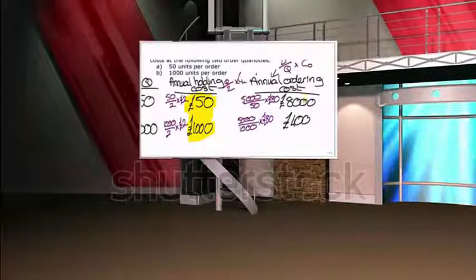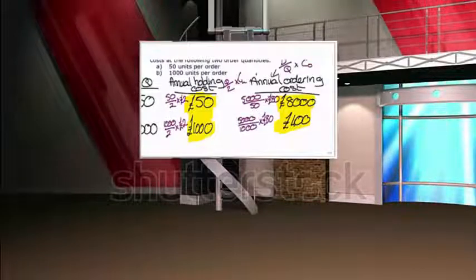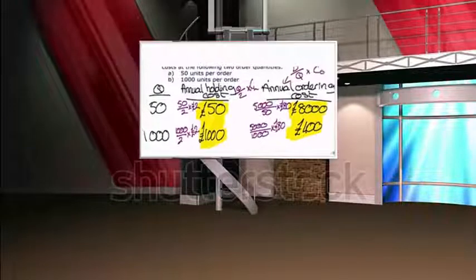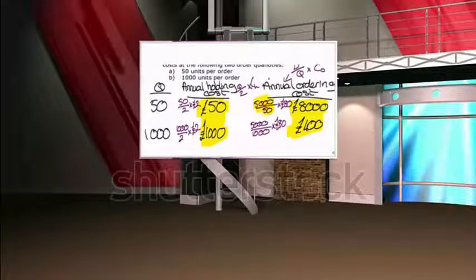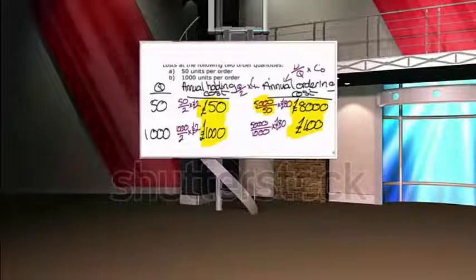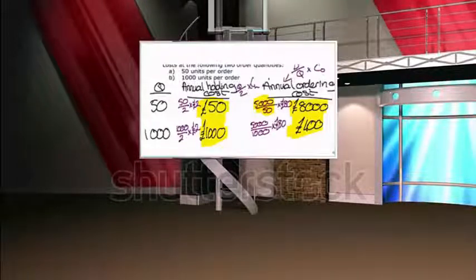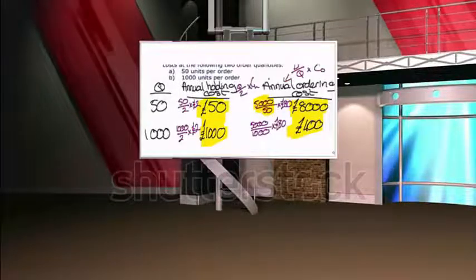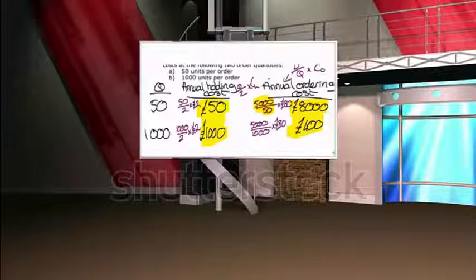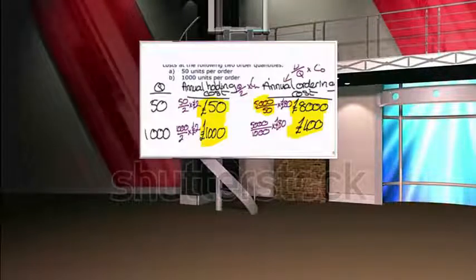We can clearly see the tradeoff: as order quantity increases, annual ordering costs drop significantly because we're placing fewer orders throughout the year. However, holding costs rise because we need more warehouse space. This illustrates why we need to find the optimal order quantity that minimizes total costs.